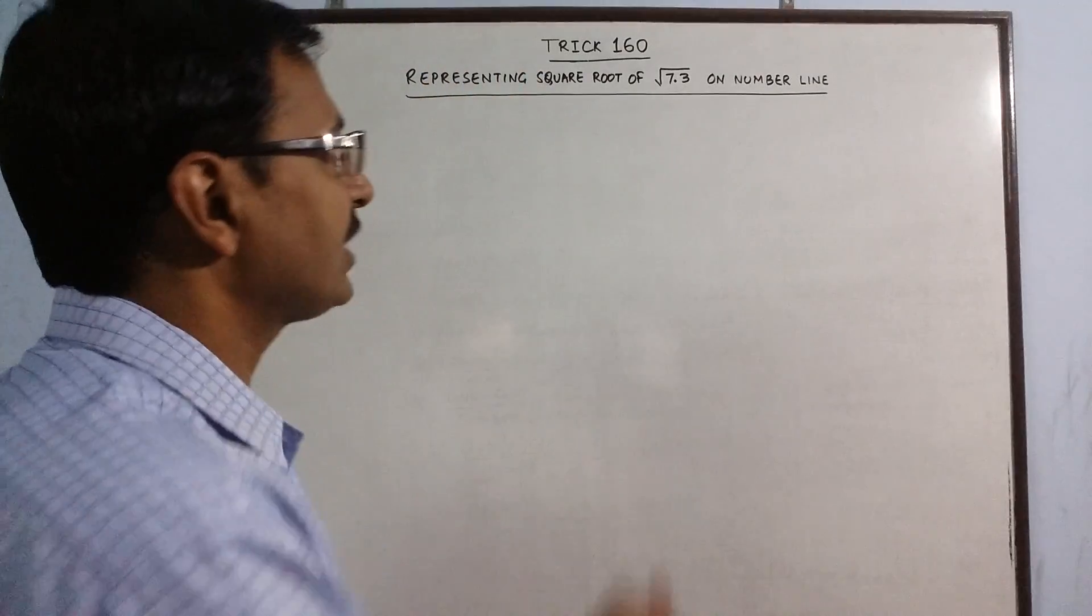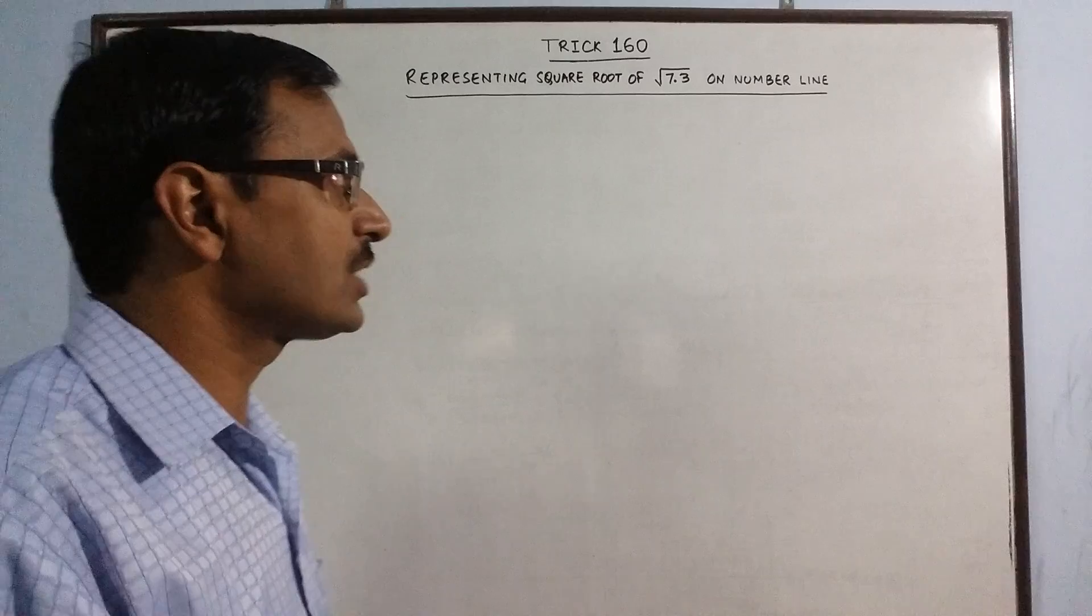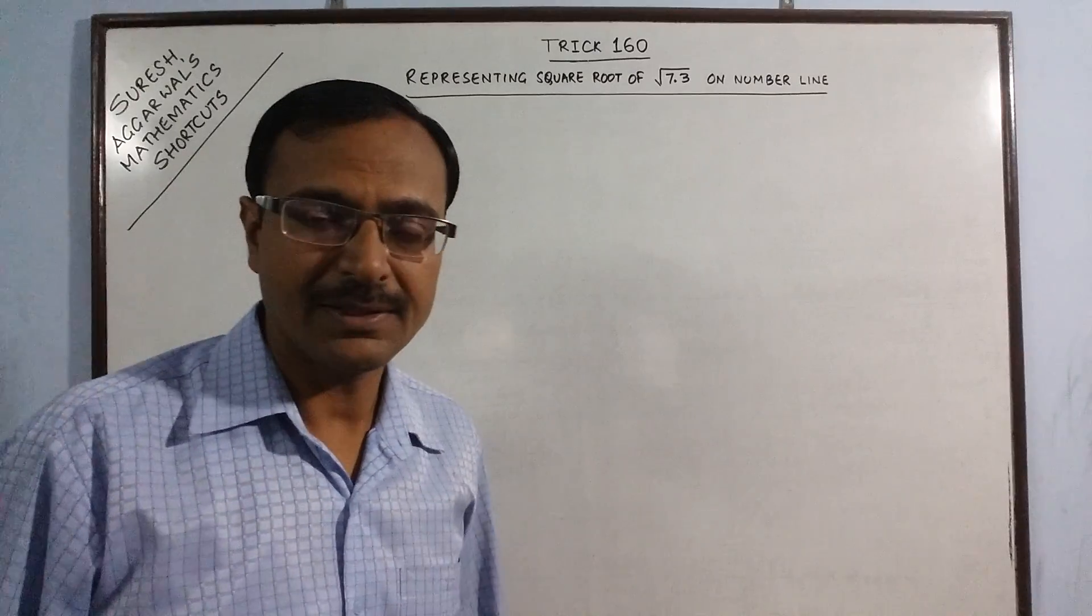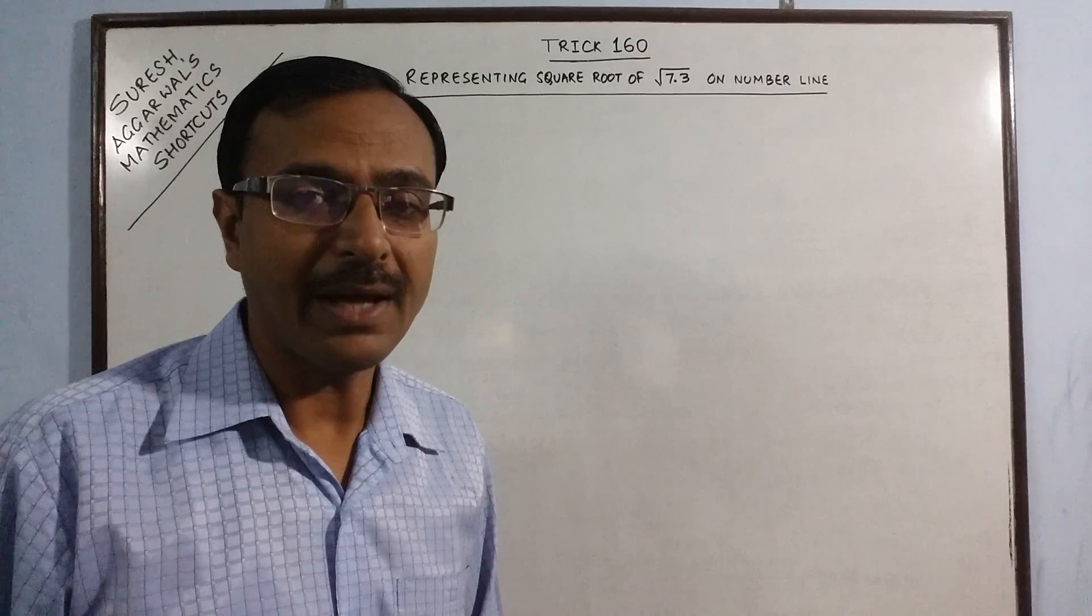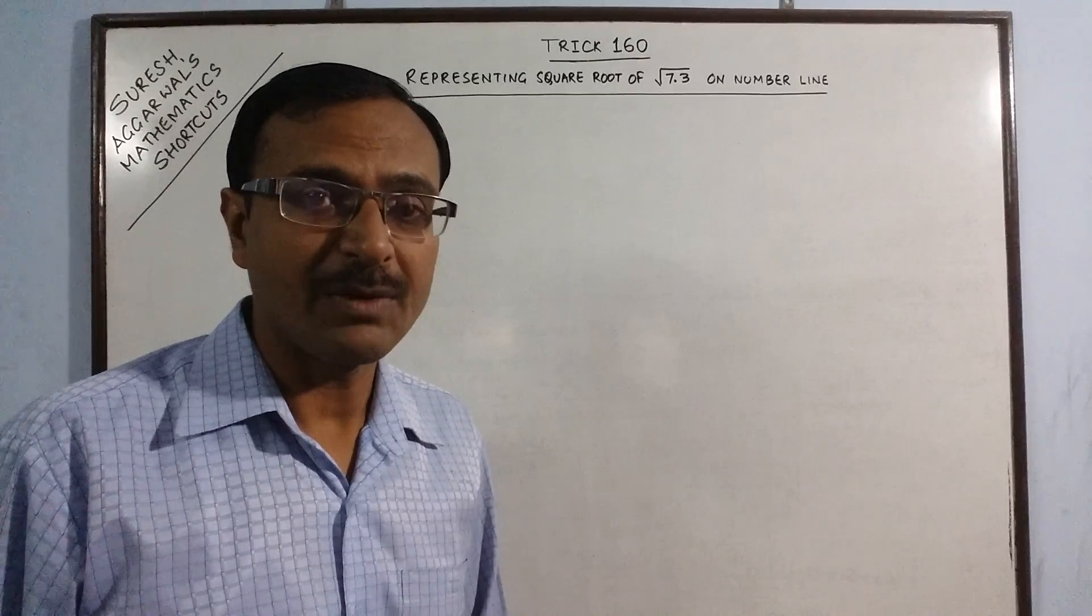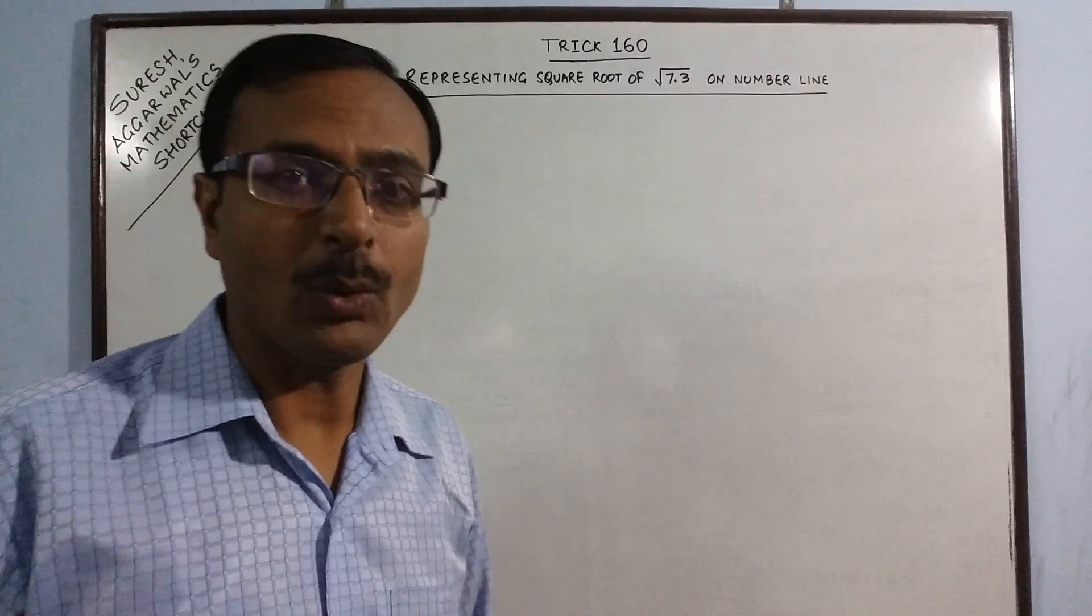One of the examples which I am going to take today is √7.3. Mostly students of Class 9th know about this method but they hardly know why that particular step has been followed in representing this √7.3 on a number line.